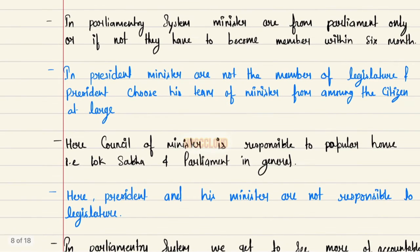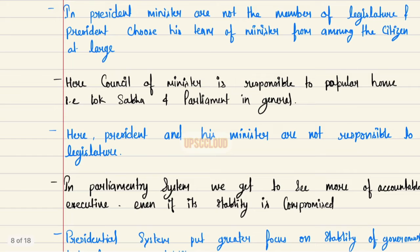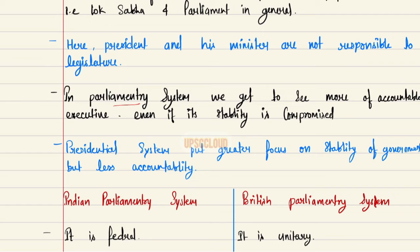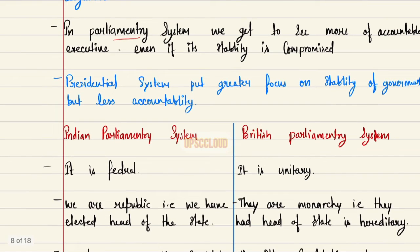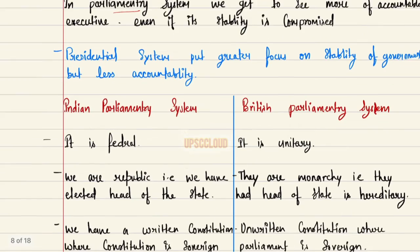In a parliamentary system, ministers are from parliament only, or if not, they have to become members within six months. In a presidential system, the president's ministers are not members of the legislature; the president chooses his team of ministers from among the citizens at large, as in America. In a parliamentary system, the Council of Ministers is responsible to the popular house, that is, the Lok Sabha and parliament in general. In a presidential system, the president and his ministers are not responsible to the legislature. Parliamentary systems offer more accountable executive even if stability is compromised, while presidential systems focus more on stability but less accountability.